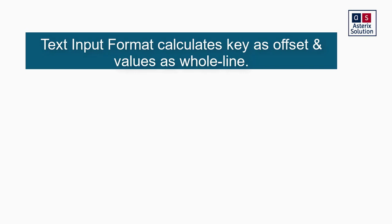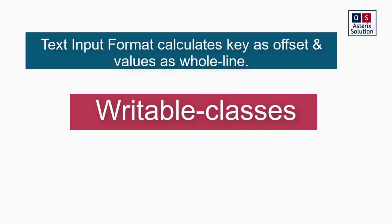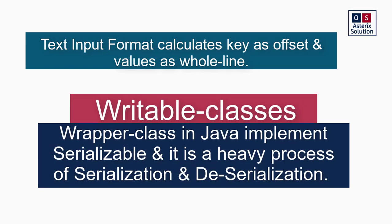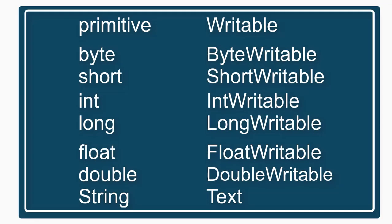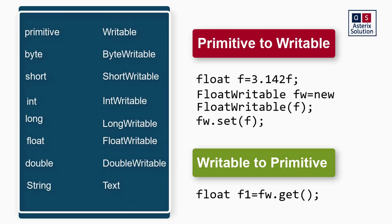For reading this format, Hadoop uses something called writable classes. Why writable classes? Java's wrapper classes implement Serializable, which increases overhead — a bad practice. I'll come up with a separate video on why Hadoop needed writable classes when wrapper classes exist. As you can see in the chart, for every primitive there is a writable class in Hadoop. Converting from primitive to writable is done using a constructor or set method, and getting back uses a get method.